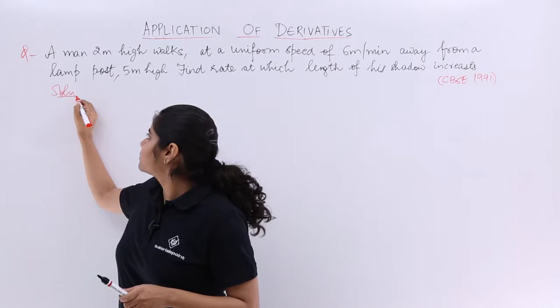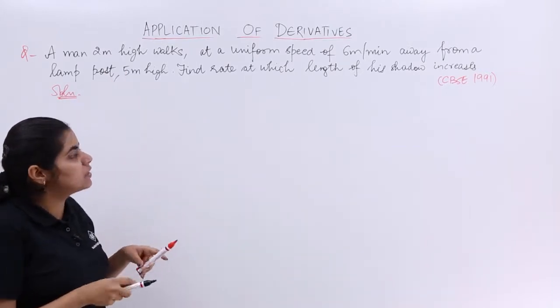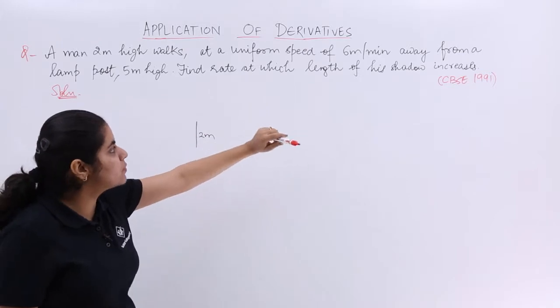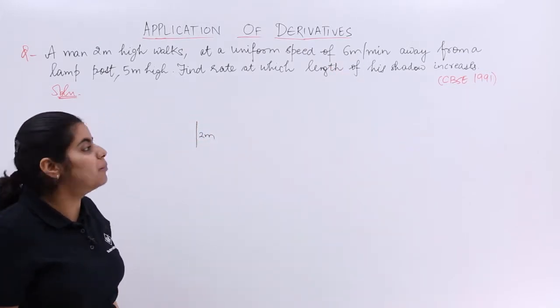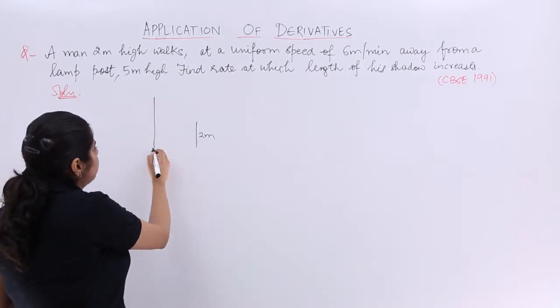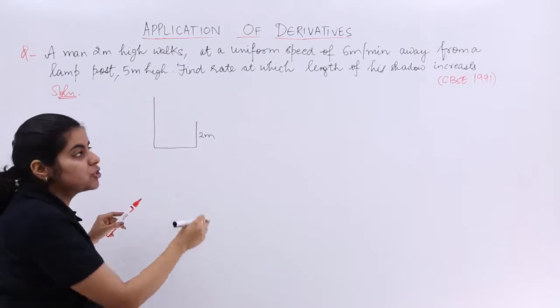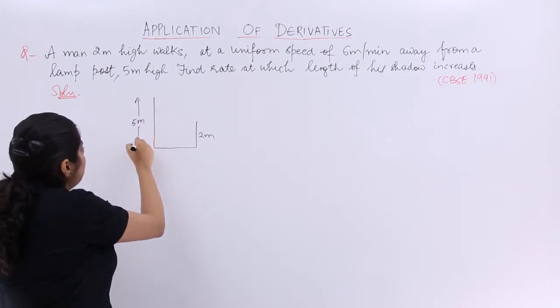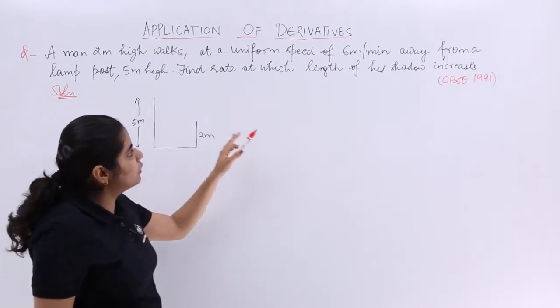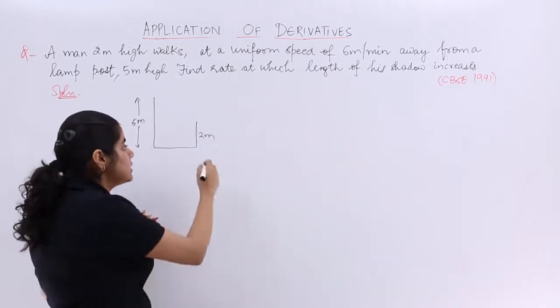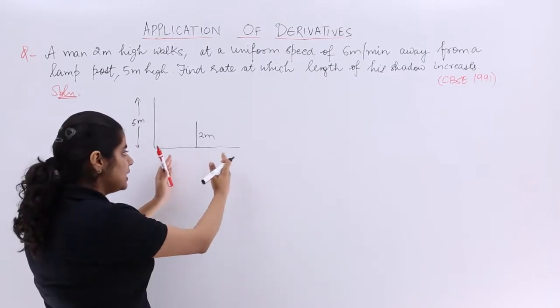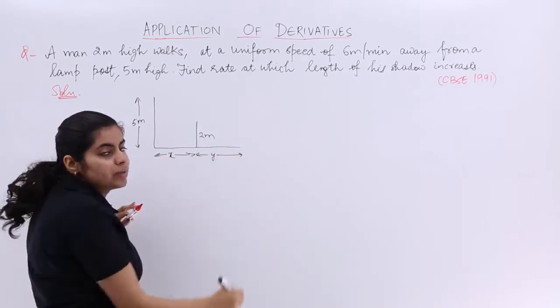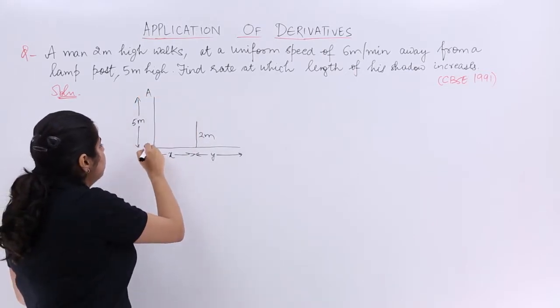Let's draw the diagram side by side so that it becomes easier for understanding. I write solution. It says a man 2 meter high walks at a uniform speed of 6 meter per minute away from a lamp post. So let me make a diagram. He walks away from this lamp post and the lamp post is 5 meter high. Now it says find the rate at which the length of his shadow increases. So since he is walking away, his length of the shadow will increase. If this distance I name as x, then this distance can be named as y, right? Let's make it a form that everybody can understand.